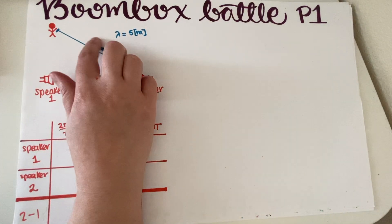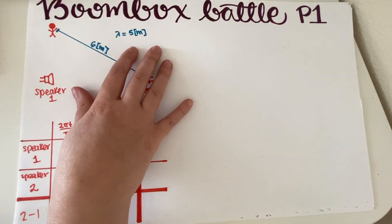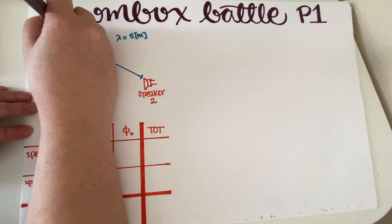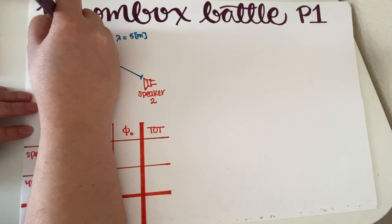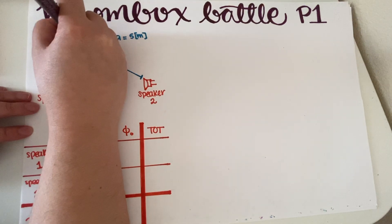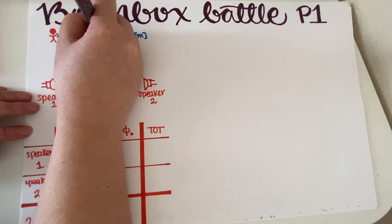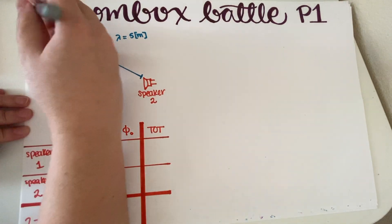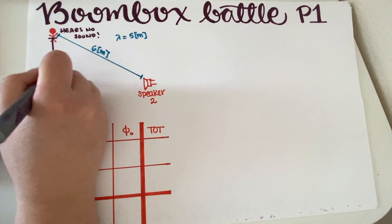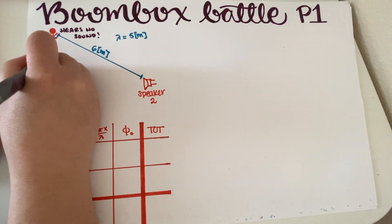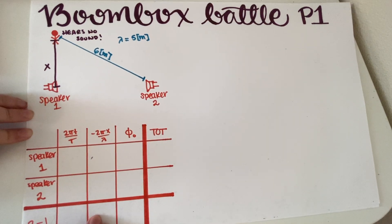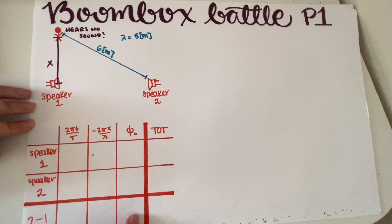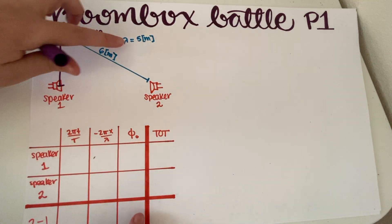As you can see, I have a little drawing over here. I have lambda over here, I have 6 meters, and I should also point out that this person here hears no sound. We want to figure out a distance X from here to Speaker 1 that makes this happen. So let's get started.